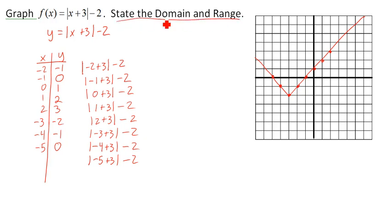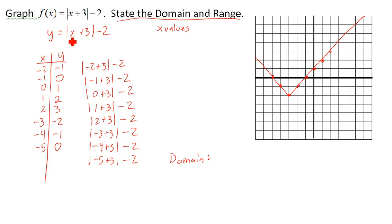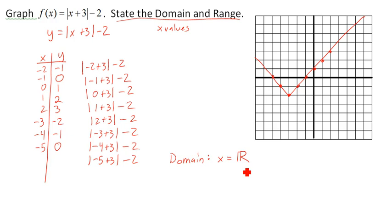Let's now state the domain and range. Remember, domain is the x values. We want to pay attention to what values x can be. In this situation, there aren't any numbers you can't put in for x. You can put fractions in, really big positive numbers, really big negative numbers — even if the stuff inside is 0, it's still possible to work out. So x equals all real numbers; the domain is all real numbers.